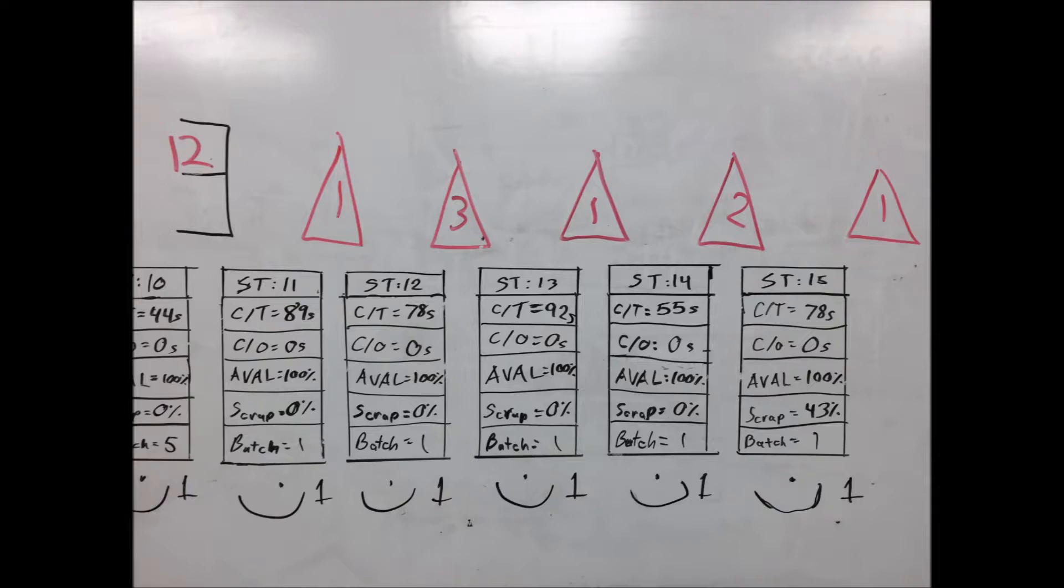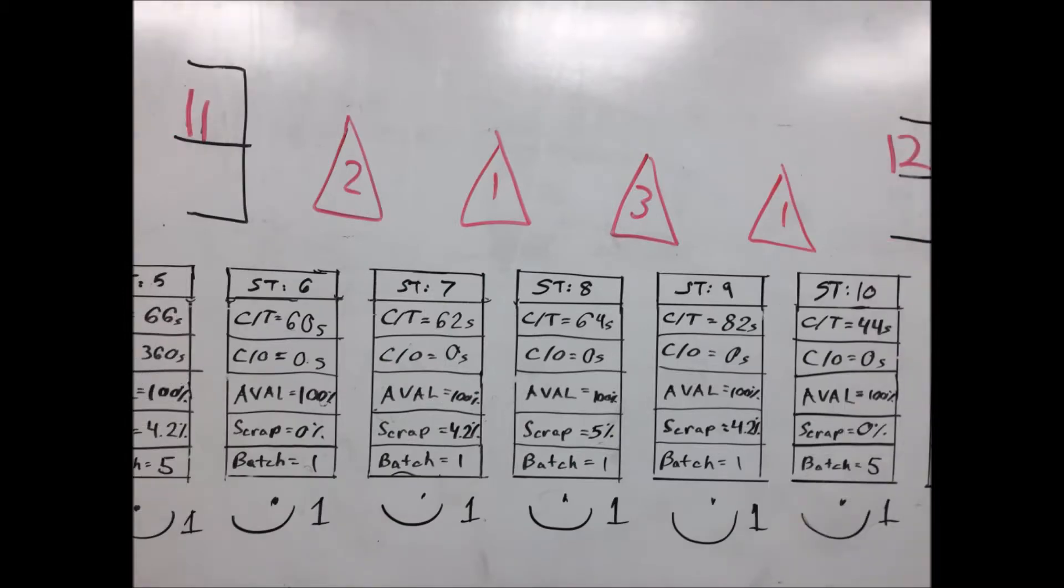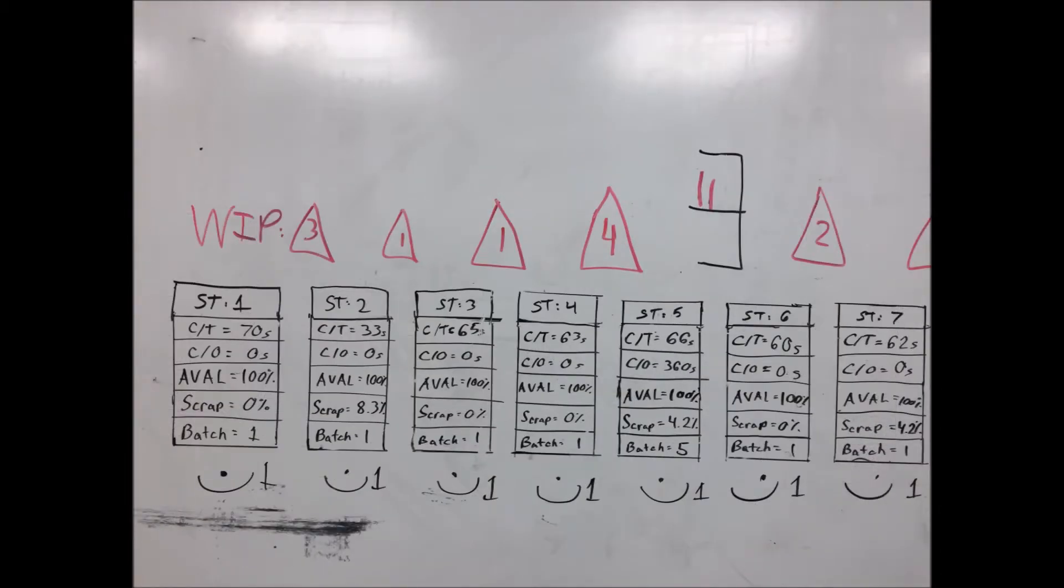A typical process box may include many types of relevant information, but should always include cycle time. Mapping out each process allows the mapper to find important information about specific processes.